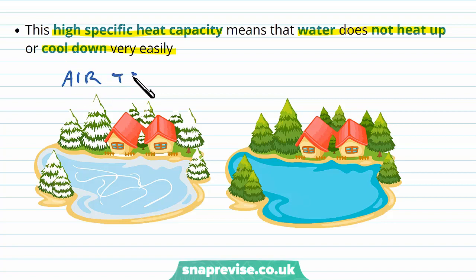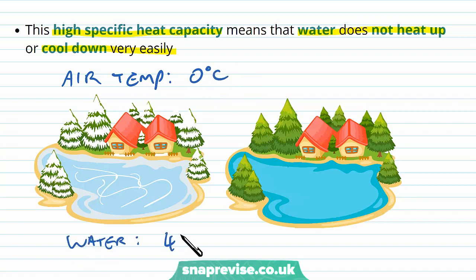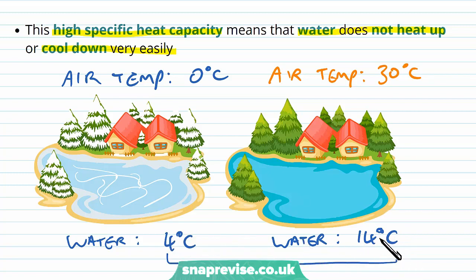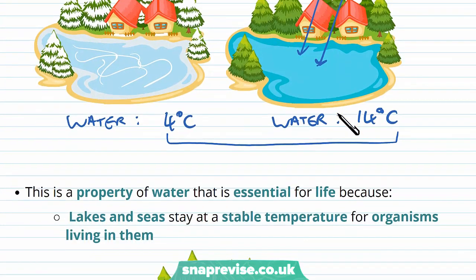For example, if the air temperature outside in the winter was 0 degrees Celsius, the water temperature could be around 4 degrees — it doesn't cool down as much as the air, or very quickly. In the summer or daytime, if the air temperature rose to about 30 degrees, the water temperature would rise, but only to about 14 degrees Celsius. So the range of temperature for water doesn't change as much as that for air. Even if the air changes between 0 and 30 degrees, the water only increases by about 10 degrees, because it takes so much energy to actually heat up the water.